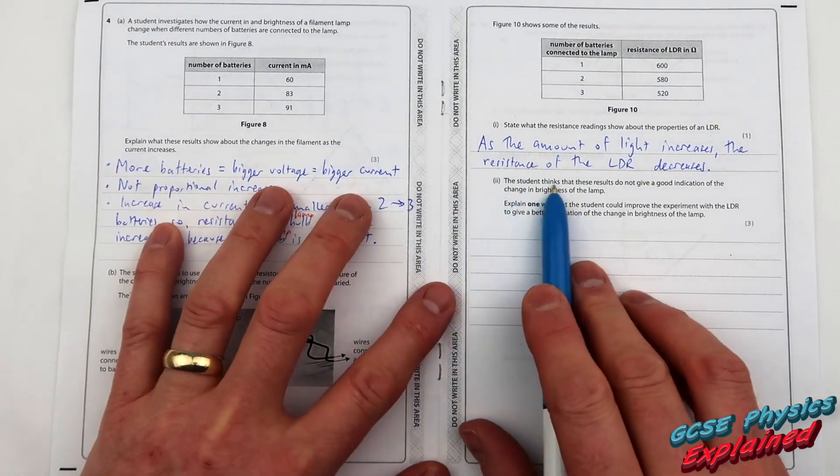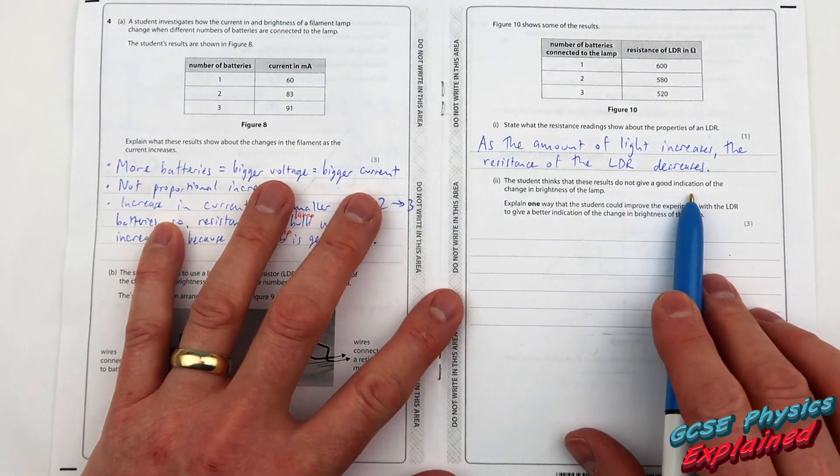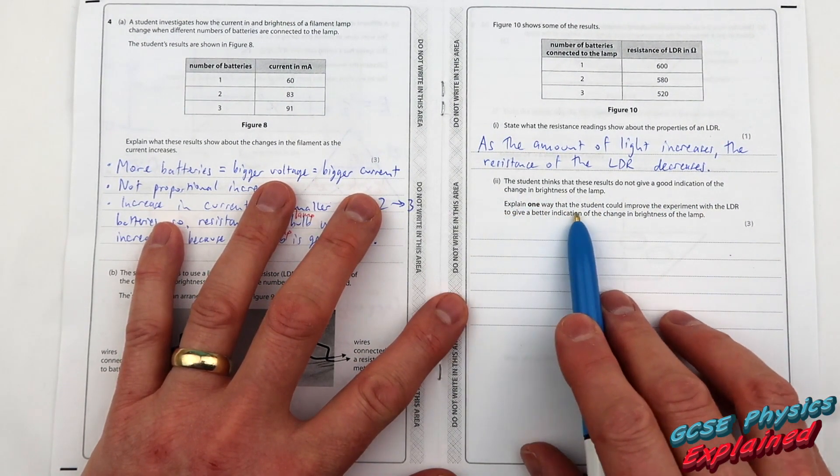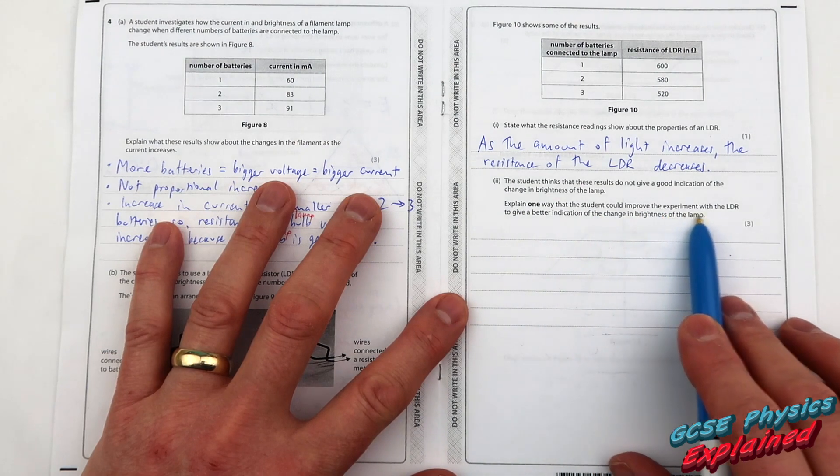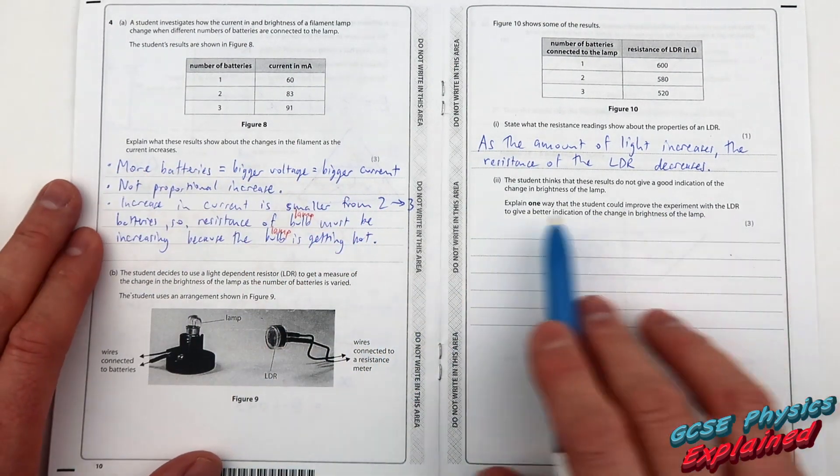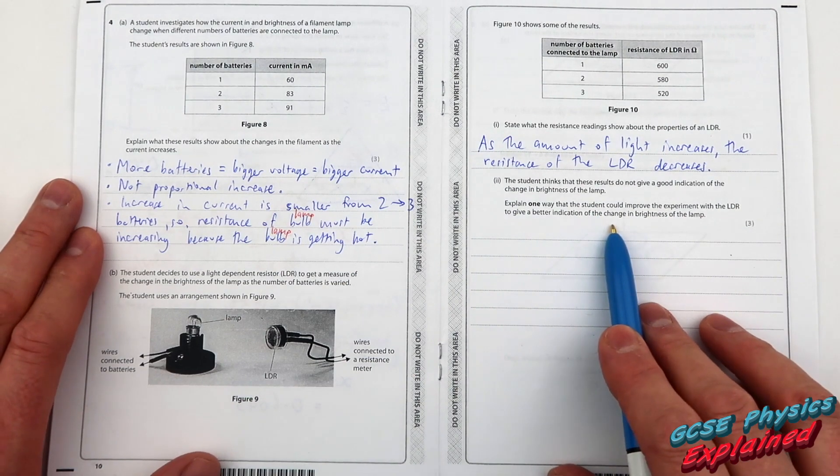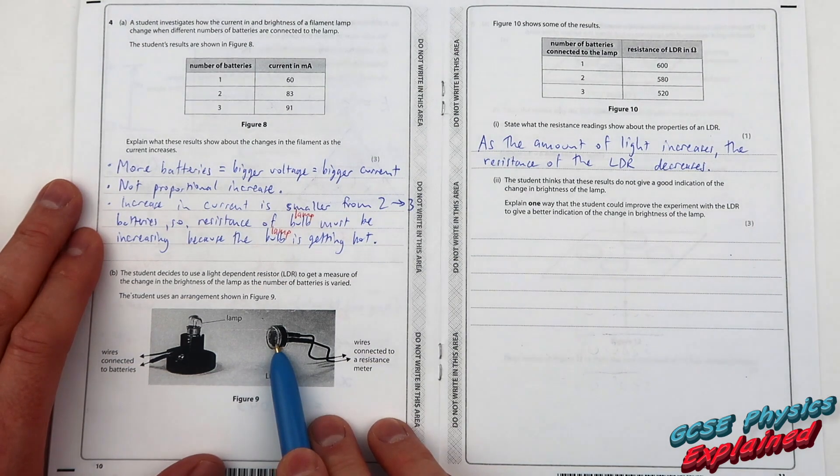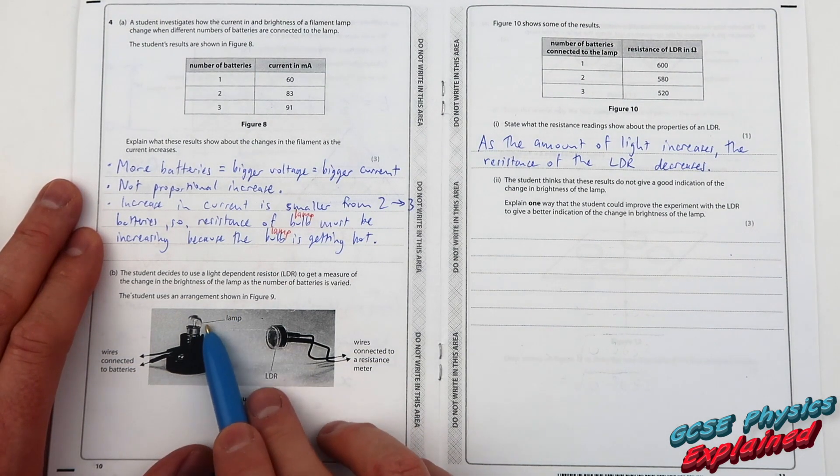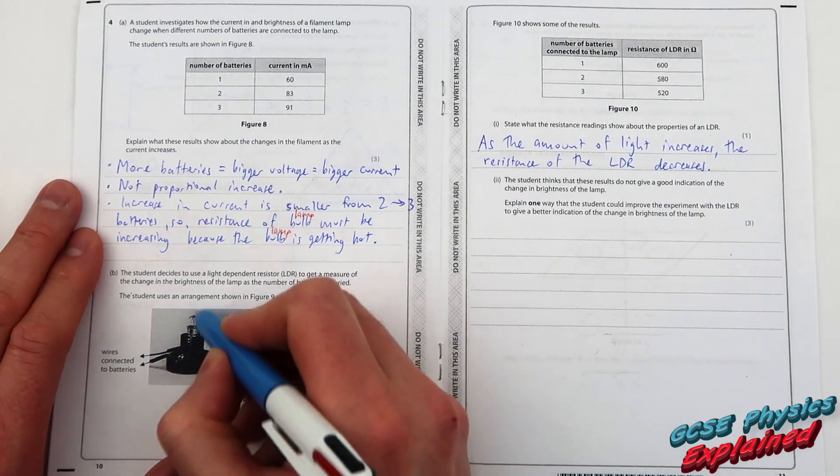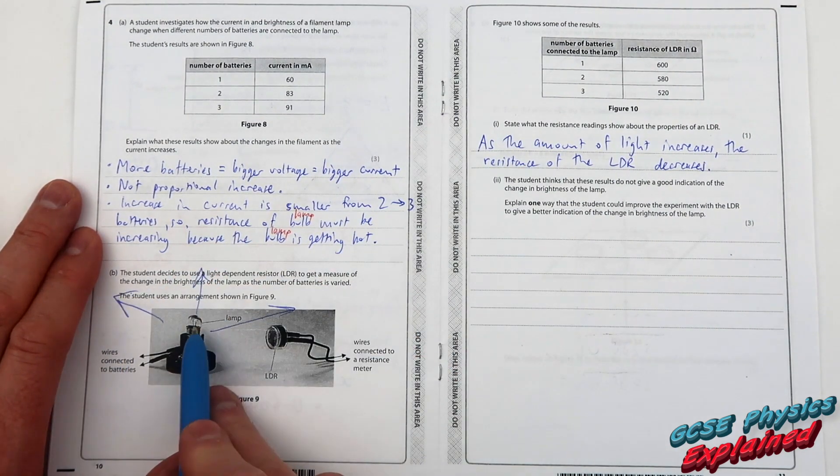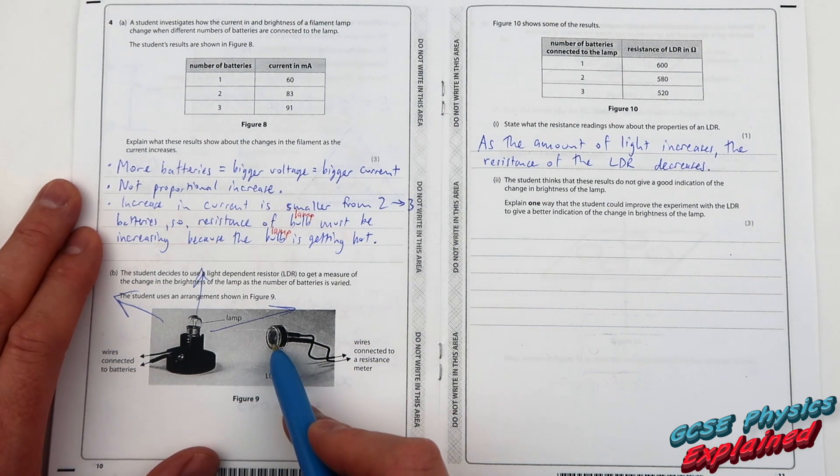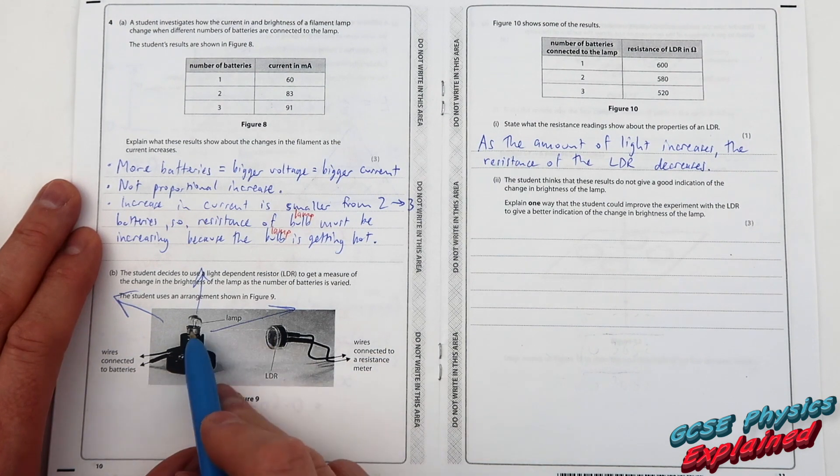Part 2. The student thinks that these results do not give a good indication of the change in brightness of the lamp. Explain one way that the student could improve the experiment with the LDR to give a better indication of the change in brightness of the lamp. The LDR is not very close to the lamp. So the lamp's light will be shining everywhere and there's actually not that much of it landing on the LDR. So one quick thing that you could do is bring the LDR closer.